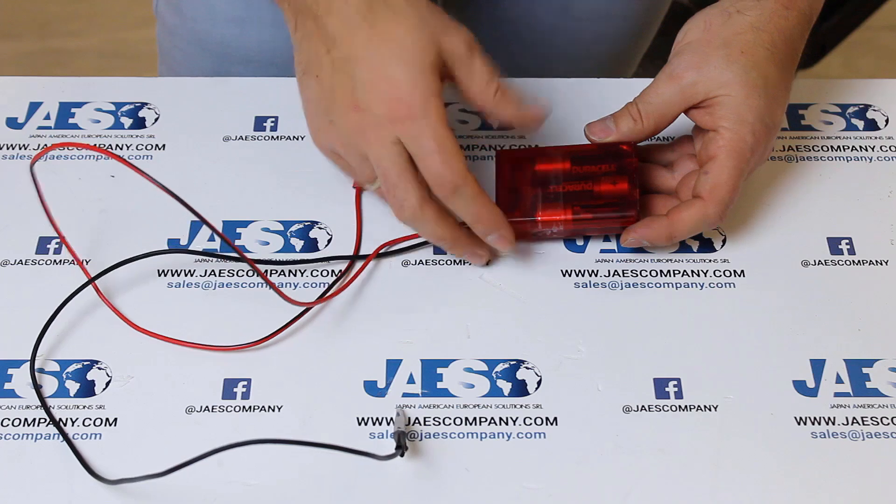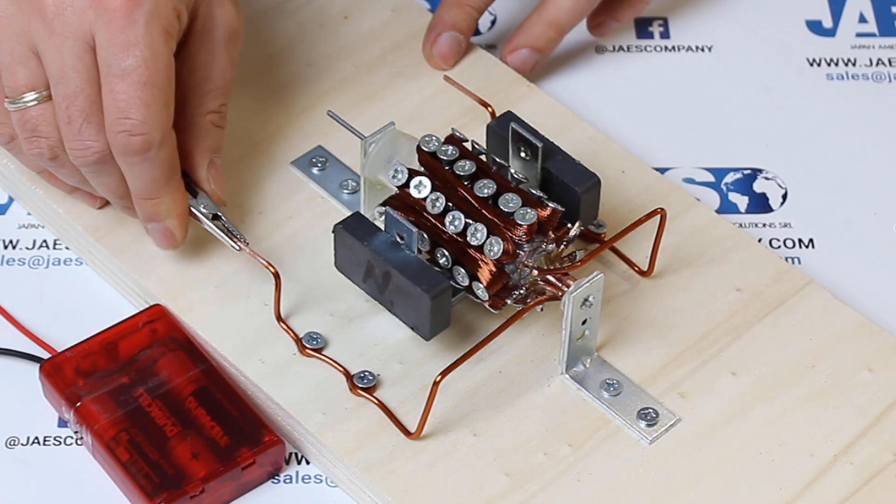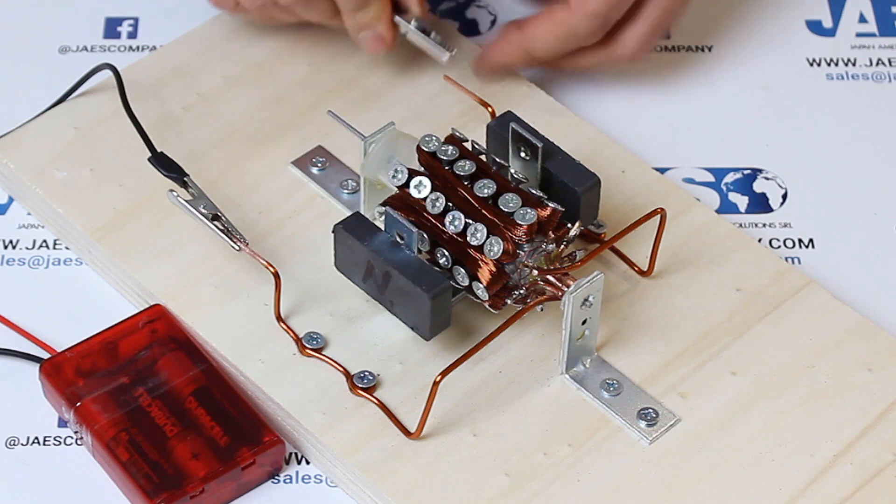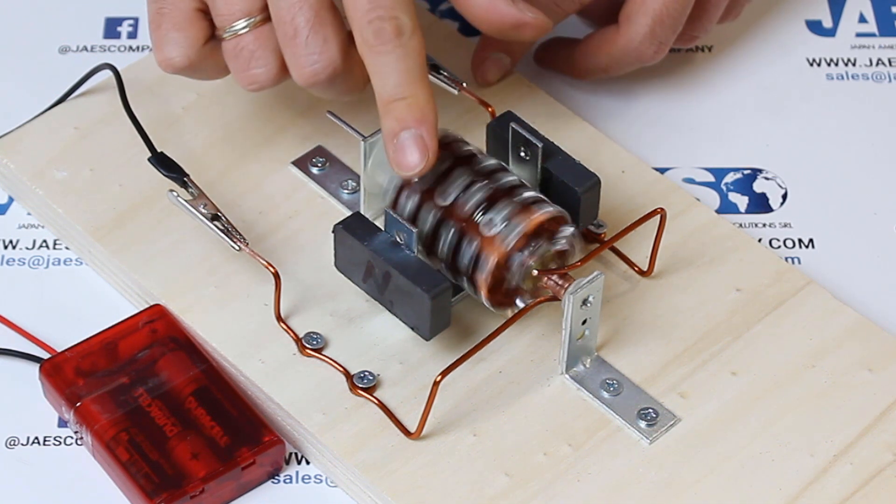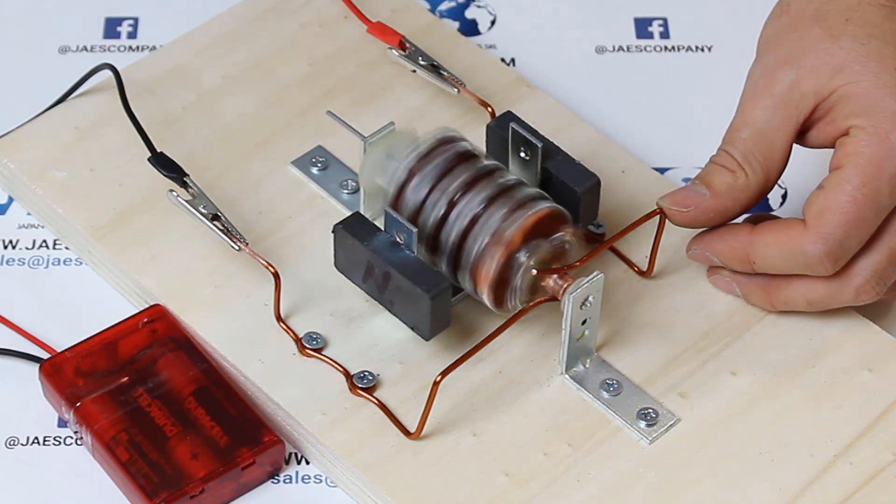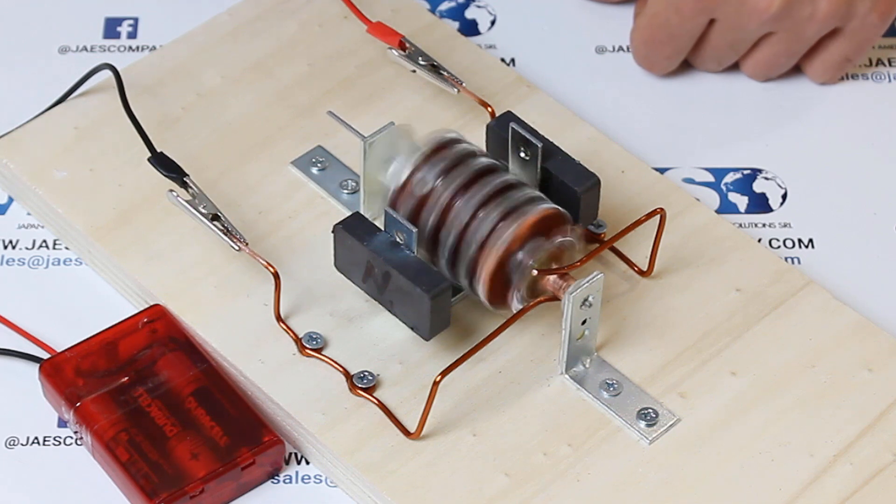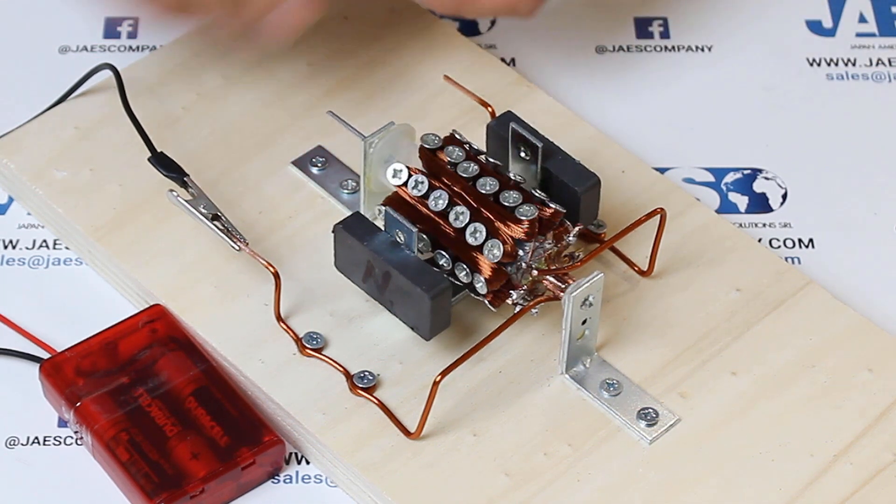Let's take our power supply and we plug the clamps on the brushes of our DC motor. It works! Our engine starts to rotate.